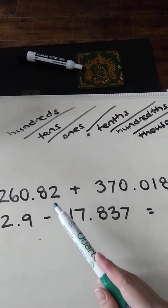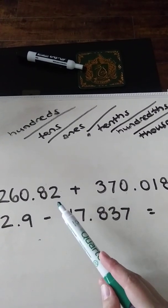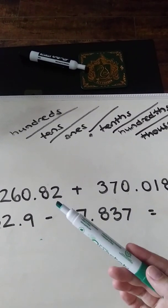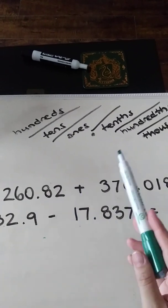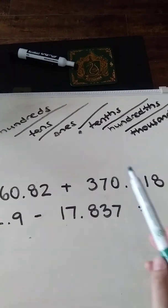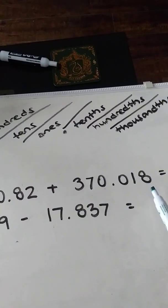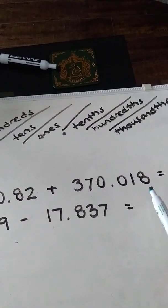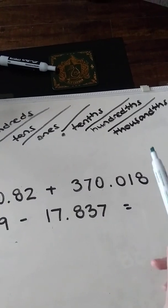And whatever you're ending, the number that you're ending by, is usually what you're saying. For example, I have my two in the hundredths place so it's 82 hundredths. The number here ends in the thousandths place so it's going to be 18 thousandths.